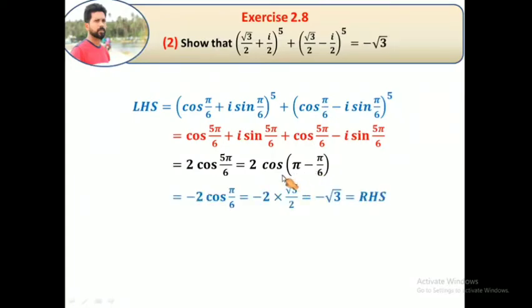This is second quadrant, 180 minus 30 equals 150. In second quadrant, cosine is negative. So we get 2 cos(5π/6) equals 2 cos(π - π/6). This gives -2 cos(π/6) equals -2 times √3/2. The 2 cancels, giving -√3.